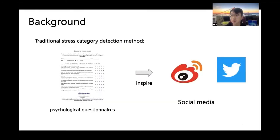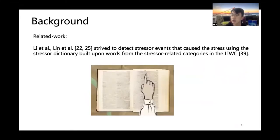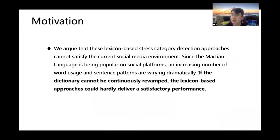Traditional stress category detection explores the use of psychological questionnaires. However, people do not tend to do psychological questionnaires unless they have to. This inspires us to leverage social media to do stress category detection. The related works all strived to detect stressor events using stressor dictionary built upon words from the stressor-related categories in the LIWC. We argue that these lexicon-based stress category detection approaches cannot satisfy the current social media environment. Since the modern language is being popular on social platforms, an increasing number of words usage and sentence patterns are varying dramatically. If a dictionary cannot be continuously revamped, the lexicon-based approaches could hardly deliver a satisfactory performance.